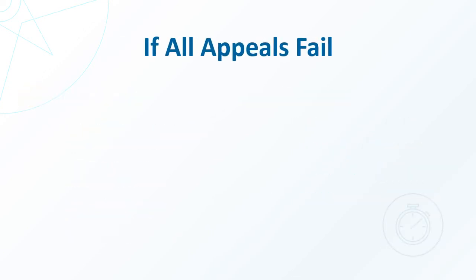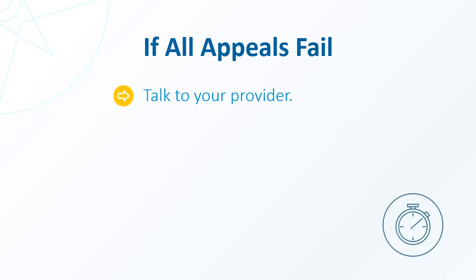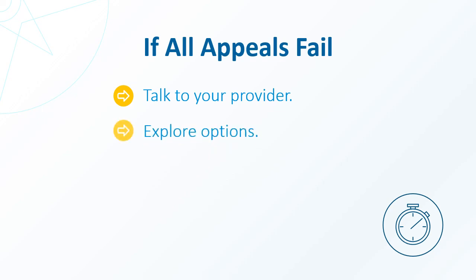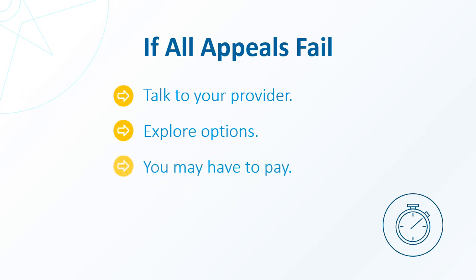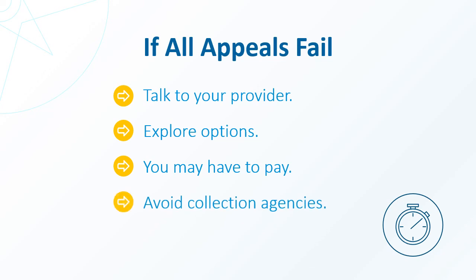After all appeals, if coverage is still denied, talk to your provider. If you haven't yet received the service or treatment, there may be alternatives or financial assistance options available. If you already received the service or treatment, you may have to pay the charges. If so, be sure to make arrangements as soon as possible to avoid having your bill sent for collection while you're exploring any financial assistance options.